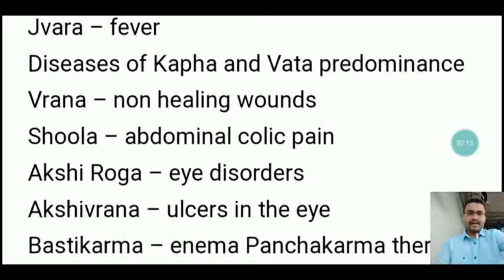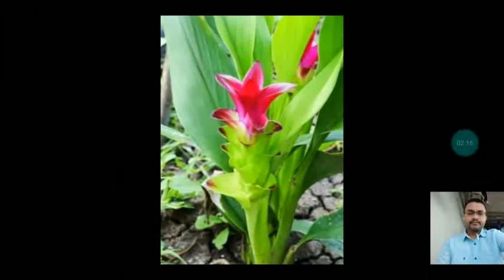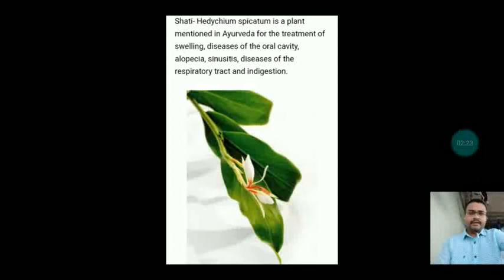The second drug on the screen is Sati. Sati, Hedychium spicatum, is a plant mentioned in Ayurveda for the treatment of swelling, diseases of the oral cavity, alopecia, sinusitis, diseases of the respiratory tract, and indigestion.